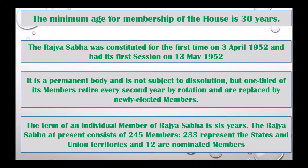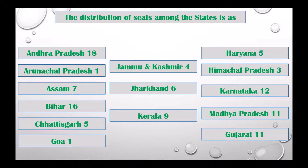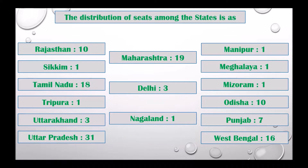The distribution of seats among the states is as follows: Andhra Pradesh 18, Arunachal Pradesh 1, Assam 7, Bihar 16, Chhattisgarh 5, Goa 1, Jammu & Kashmir 4, Jharkhand 6, Kerala 9, Haryana 5, Himachal Pradesh 3, Karnataka 12, Madhya Pradesh 11, Gujarat 11, Rajasthan 10, Sikkim 1, Tamil Nadu 18, Tripura 1, Uttarakhand 3, Uttar Pradesh 31, Maharashtra 19, Delhi 3, Nagaland 1, Manipur 1, Meghalaya 1, Mizoram 1, Odisha 10, Punjab 7, West Bengal 16.